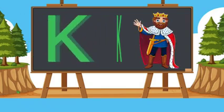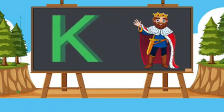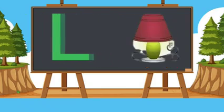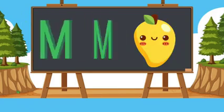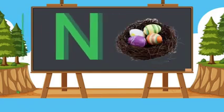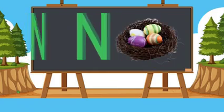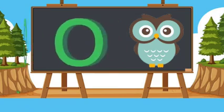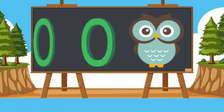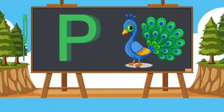K for king, L for lamb, M for mango, N for nest, O for owl, P for peacock.